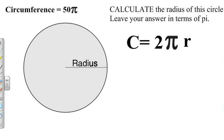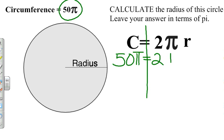We will start with our formula c equals 2 pi r. In this example, we're given our circumference, it's 50 pi. I will start substituting c equals 50 pi and that is equal to 2 pi r.